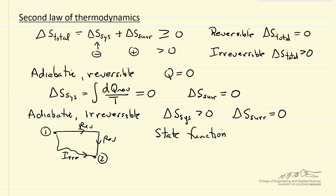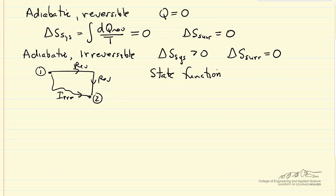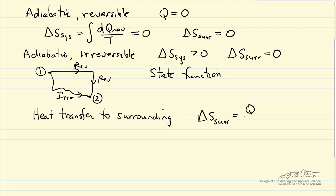Now if we have an irreversible process where we have heat transfer to the surroundings at constant temperature, then delta S for the surroundings can be Q over T, where T is absolute temperature, even if Q is from an irreversible process.